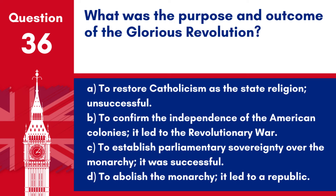Question 36. What was the purpose and outcome of the Glorious Revolution? a. To restore Catholicism as the state religion – unsuccessful. b. To confirm the independence of the American colonies – it led to the Revolutionary War. c. To establish parliamentary sovereignty over the monarchy – it was successful. d. To abolish the monarchy – it led to a republic. Answer: c. The Glorious Revolution of 1688 aimed to establish parliamentary sovereignty over the monarchy, resulting in the constitutional monarchy that exists today.